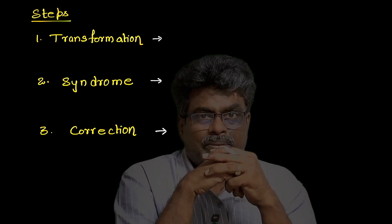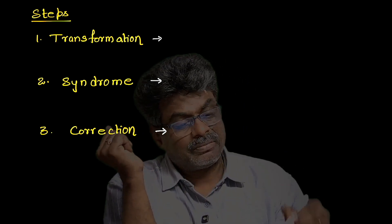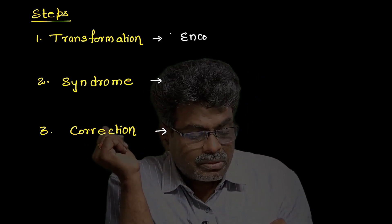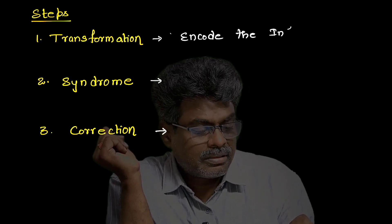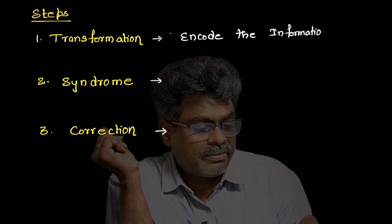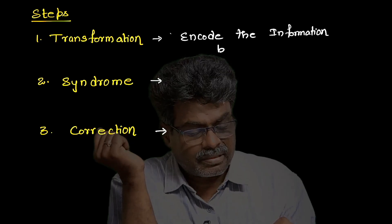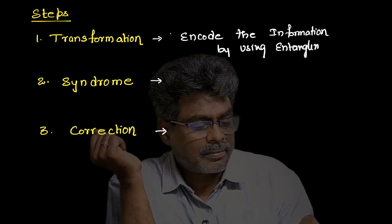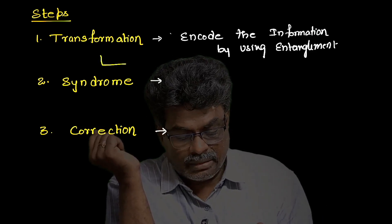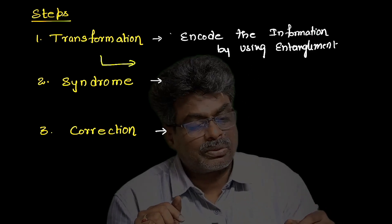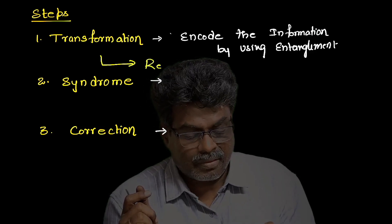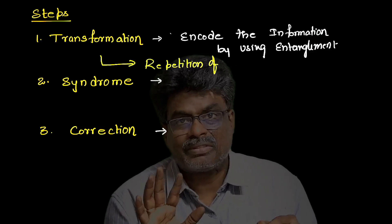Let us discuss the steps for quantum error correction. The first step is transformation. In this step, we encode the information by using entanglement. This transformation will enable repetition of qubits — that means if you have |0⟩, it is encoded to |000⟩, and |1⟩ is encoded to |111⟩.